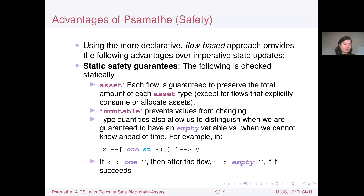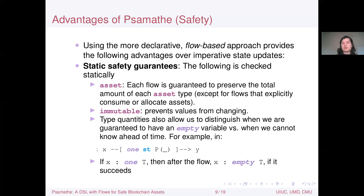Using this declarative flow-based approach gives several safety advantages. Statically, we can guarantee that each flow preserves the total amount of each asset type — assets will not be lost or duplicated — except for flows that consume or explicitly allocate assets using new, where it is clear they may change the asset count. Immutability preventing value changes can also be checked statically. Type quantities allow us to distinguish cases where variables are guaranteed empty versus when we cannot know ahead of time.